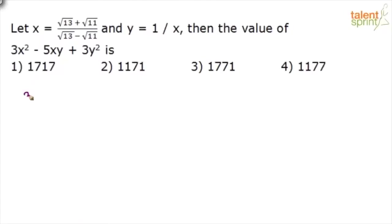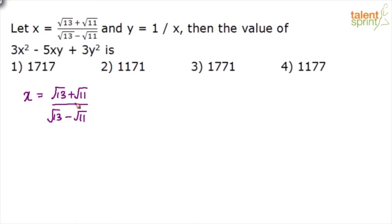Let x equal to (√13 + √11) divided by (√13 - √11) and y is equal to 1 by x. First of all, let us rationalize this term and get it in simple form. We'll multiply both numerator and denominator by (√13 + √11).